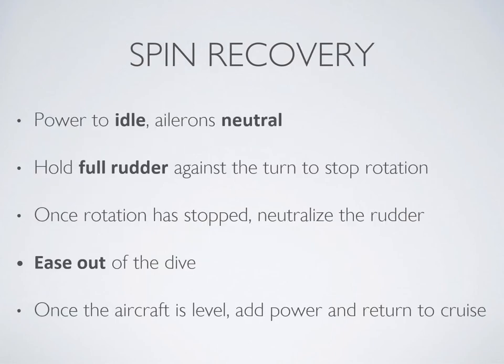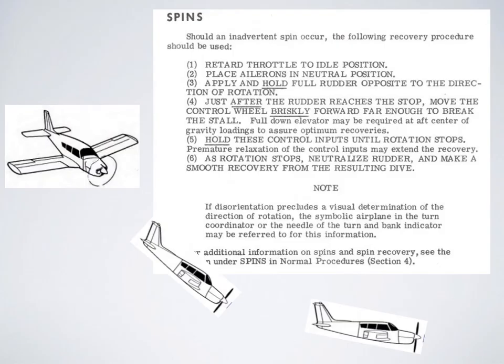To recover: pull power to idle, ailerons neutral, hold full opposite rudder, then neutralize the rudder once the rotation has stopped, ease the nose back up to a climb attitude, then gradually add full power and return to altitude. Review the spin recovery section from your POH and make sure your aircraft is certified for spins. A Cessna 152 is always certified for spins with proper loading; however, the 172 only permits spins under specific loading conditions.